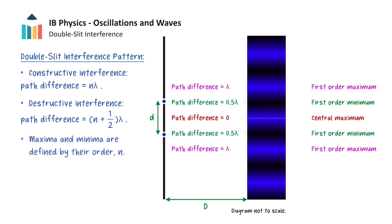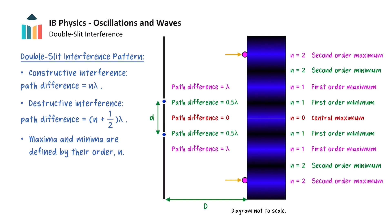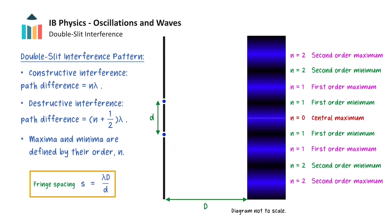In particular, these maxima and minima are defined by their order, denoted by n. The central maximum has an order of zero, and the order of maxima and minima increases with distance from the central maximum. For example, these two maxima have order 2, since they are the second maxima from the central maximum. Note that the fringe spacing equation gives the distance between any two successive maxima or minima. If we wanted to know the distance between the central maximum and the second order maximum, we would have to multiply this equation by 2.